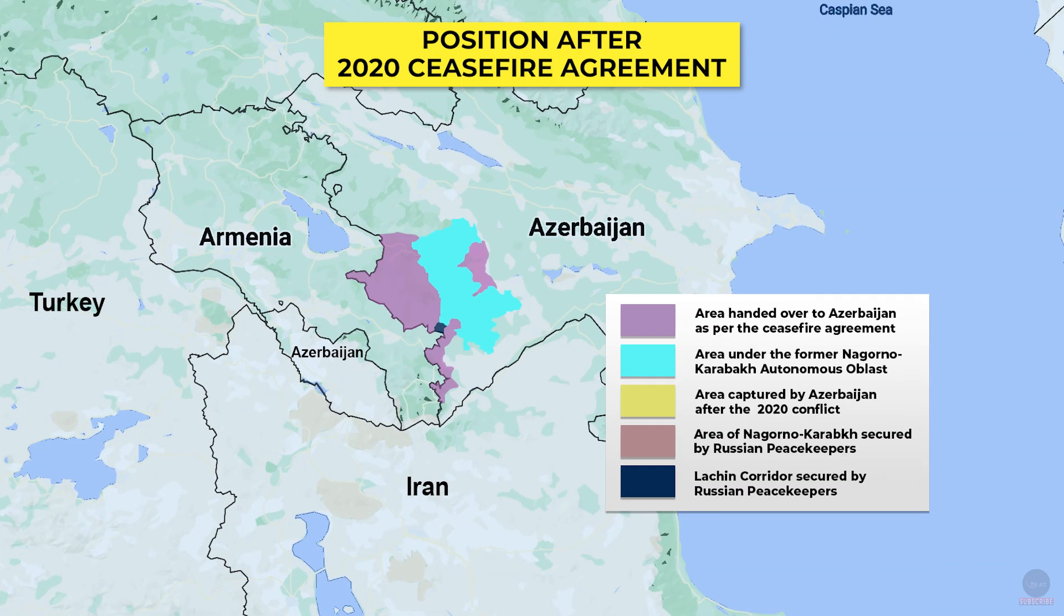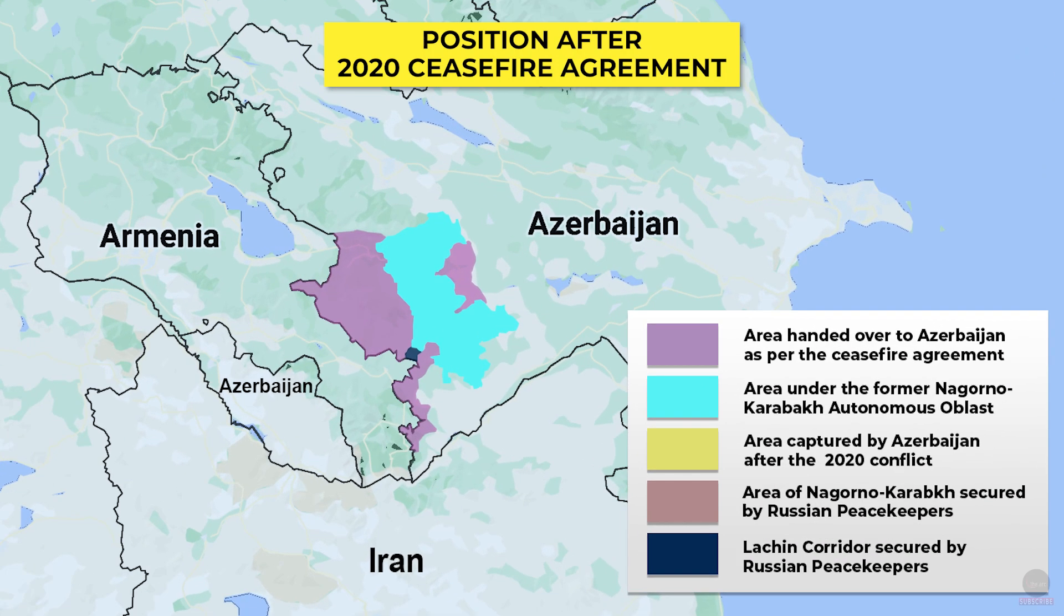Armenia was convincingly defeated in the war and finally a ceasefire agreement was signed on 19 November 2020 after the capture of Susha city in Nagorno-Karabakh by Azerbaijan. After the ceasefire, this is the position currently held by all the sides.